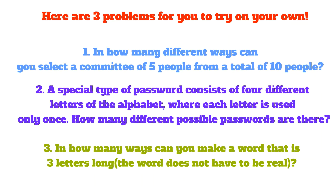Here are 3 problems for you to try on your own. Number 1: In how many different ways can you select a committee of 5 people from a total of 10 people? Number 2: A special type of password consists of 4 different letters of the alphabet, where each letter is used only once. How many different possible passwords are there? Number 3: In how many ways can you make a word that is 3 letters long? The word does not have to be a real word. If you know the answers, be sure to comment them below to check if you are correct.